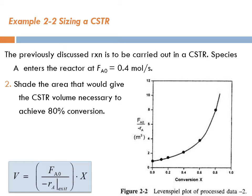Well, in order to do this, first we need to look at the equation. What is the equation saying? The equation says that volume equals FA0 over minus RA, evaluated at the exit, times this X. So this is FA0 over minus RA, and this is X.